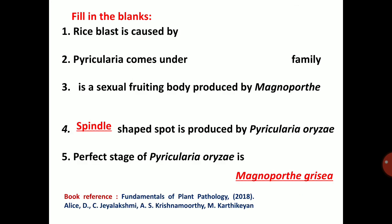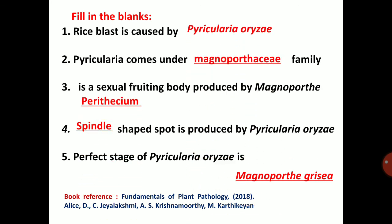This concludes the topic of Pyricularia oryzae. Key points: rice blast is caused by Pyricularia oryzae; it comes under family Magnaporthaceae; the perithecia is the sexual fruiting body produced by Magnaporthe grisea; spindle-shaped spots are produced by Pyricularia oryzae; and the perfect stage of Pyricularia oryzae is Magnaporthe grisea. Thank you.